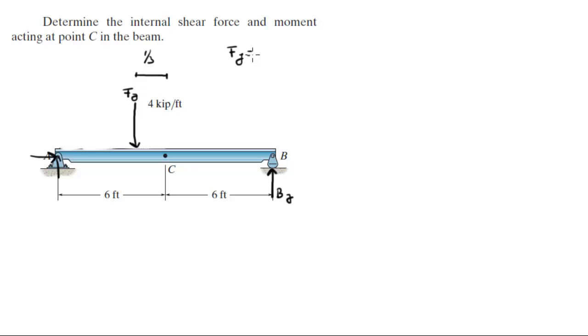And if you wanted to find FY, all you got to do is find the area of the triangle which has a length of 6 times the height of 4 divided by 2 because it's a triangle. So this comes out to be 12 kilopounds.